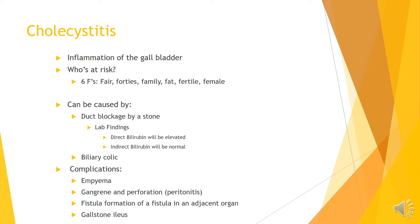When thinking about cholecystitis, it's easy to think of the 6Fs for who's at risk. It's typically seen with fair-skinned, 40-year-old females of fertile age, with a family history, and who tend to be fat — those are your 6Fs. Patients can fall outside of these, but this is a generic, typical view of who you're going to see patient-wise.